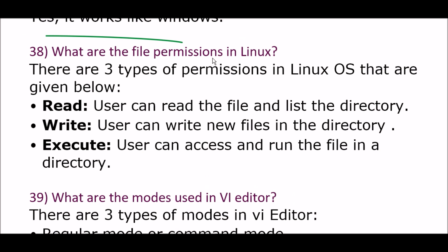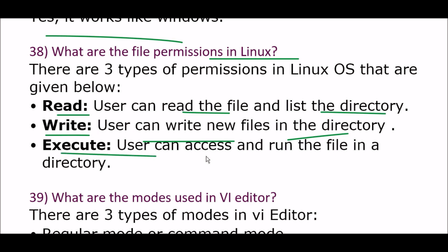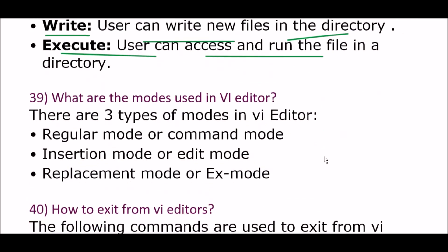Next question: what are the file permissions in Linux? There are three types of permissions: first, read — the user can read the file and list the directory; second, write — the user can write new files in the directory; third, execute — the user can access and run the file in a directory.